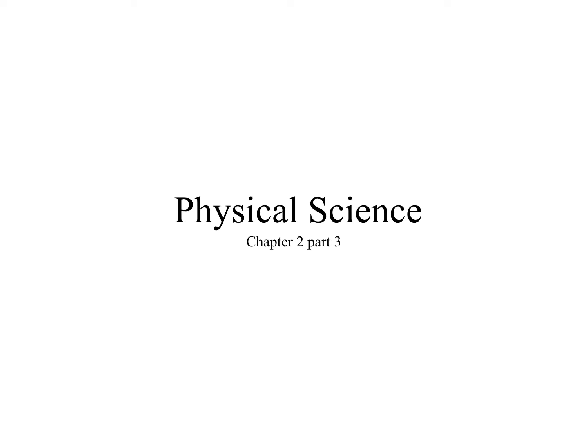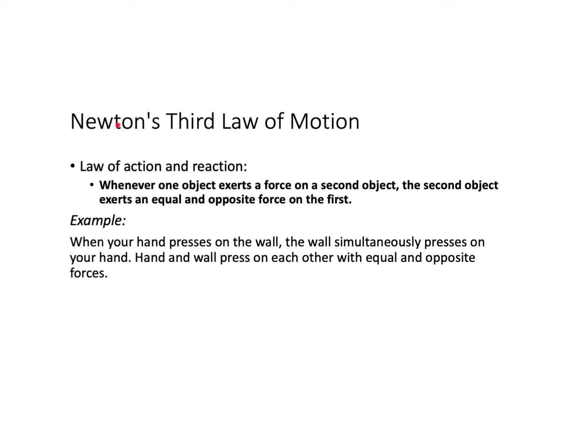We have looked at Newton's first and second laws of motion. In this video, we're going to consider Newton's third law of motion, which is sometimes called the law of action and reaction. It says whenever one object exerts a force on a second object, the second object exerts an equal and opposite force on the first. Sometimes you hear that said as: for every action, there's an equal and opposite reaction. That's kind of an old-timey way of stating it. The word action in that context actually means force, so you could say for every force, there's an equal and opposite reaction force. That's the basic idea.